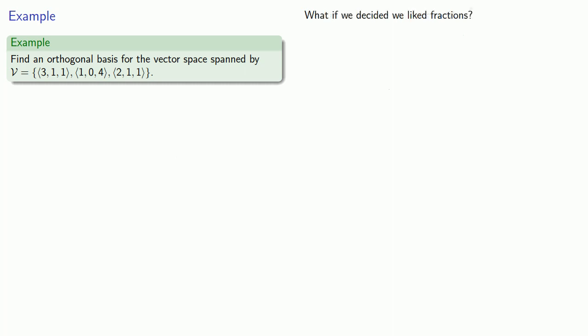Okay, so I know that some of you are saying we're kind of being mean to fractions, keeping them out of all of our problems and not letting them be solutions. What if we decided we liked fractions? Well, as before, we'd go through our process and we'd find our second basis vector to be (-10/11, -7/11, 37/11).